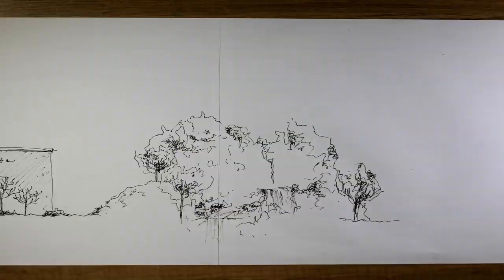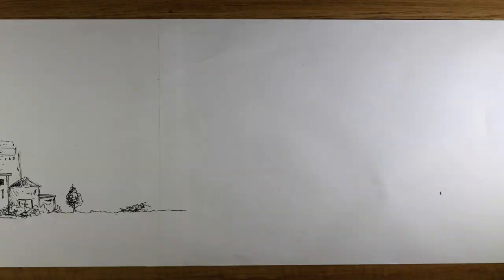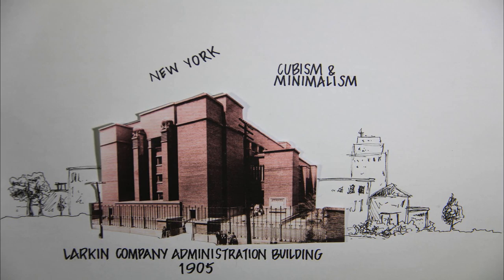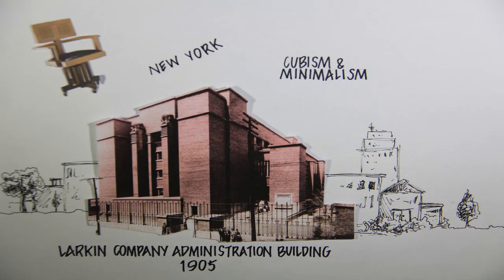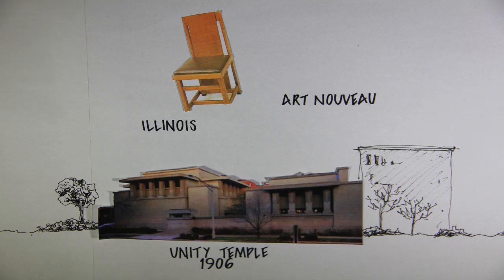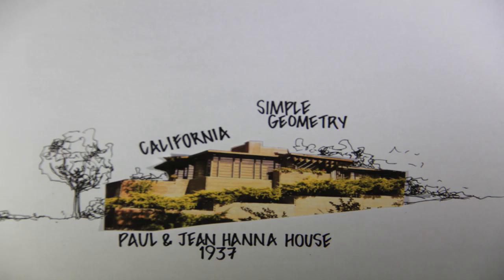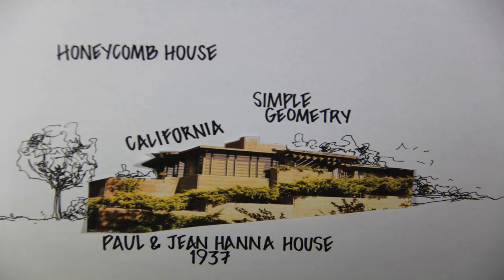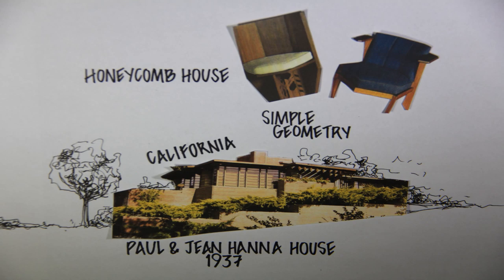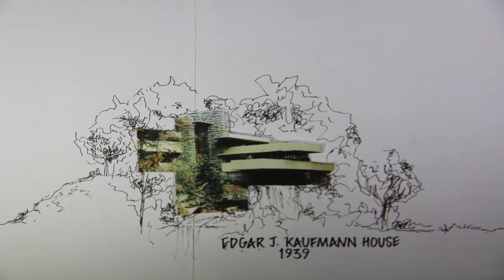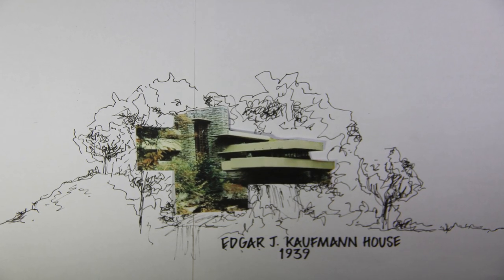Wright often designed furniture for his buildings. For example, he designed a wheeled chair for the Larkin Building — according to Wright, to make cleaning more convenient. He designed a wooden chair for Unity Temple. And for the Paul and Jean Hannah House, also known as the Honeycomb House, he designed hexagonal chairs to fit the name.